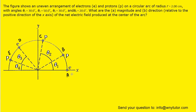Next, we want to draw the electric fields produced by each of these point charges. Let's begin with the charge marked A, which is an electron and is therefore negatively charged. Electric fields point towards negative charges, so we would have an electric field vector pointing towards the negative charge, and we can label that EA.